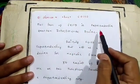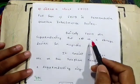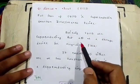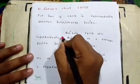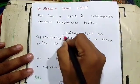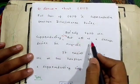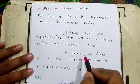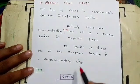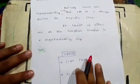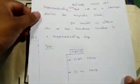The full form of SQUID is Superconducting Quantum Interference Devices. Basically, SQUIDs are a superconducting ring that acts as a storage device for magnetic flux. It consists of either one or two Josephson junctions in a superconducting ring. There are basically two types of SQUID: DC SQUID and RF SQUID.